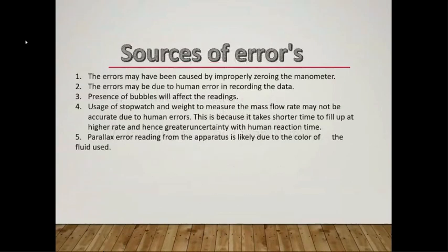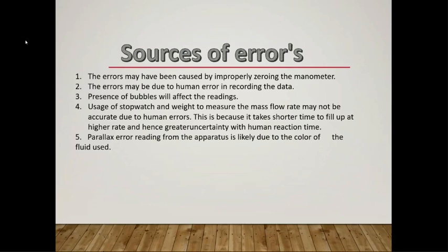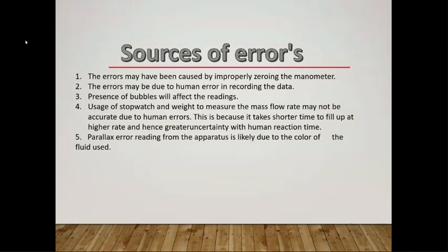Sources of error include: improperly zeroing the manometer; human error in recording data; presence of bubbles — trapped air and bubbles can create error in the pressure difference reading; inaccuracy in using the stopwatch to measure mass flow rate due to human reaction time, especially at higher flow rates where filling time is shorter; and parallax error in reading from the apparatus, likely due to the color of the fluid.